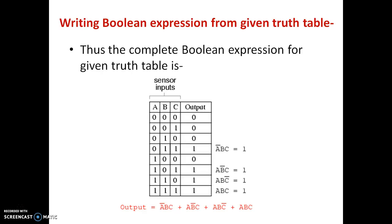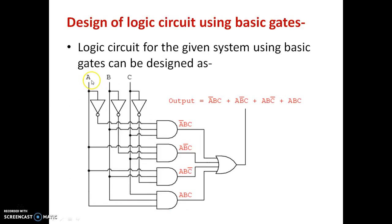Here is the circuit which has the inputs A, B, and C. The complemented outputs are also taken by connecting a NOT gate, giving A complement, B complement, and C complement. Now to get the term A complement B C, we connect the complemented A output as the first input to an AND gate, then uncomplemented B as the second input, and uncomplemented C as the third input to this 3-input AND gate.